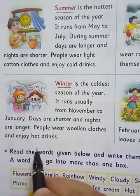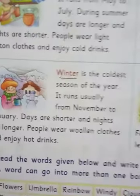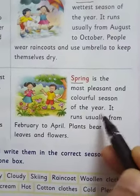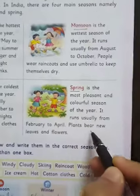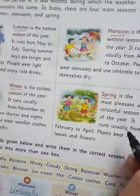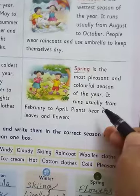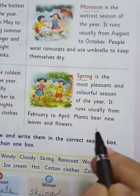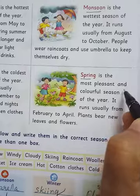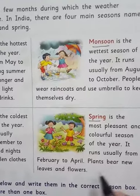Spring is the most pleasant and colourful season of the year. It runs usually from February to April. Plants wear new leaves and flowers bloom. It is a very pleasant season.